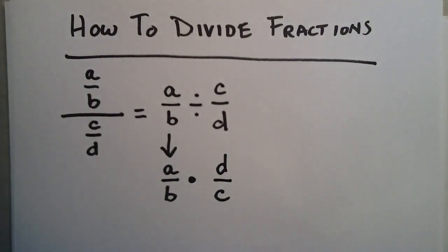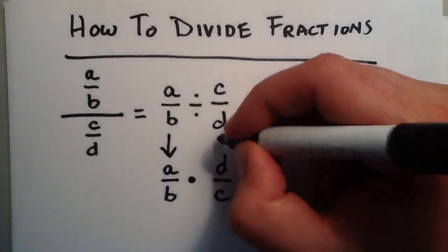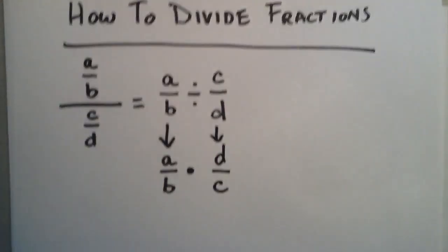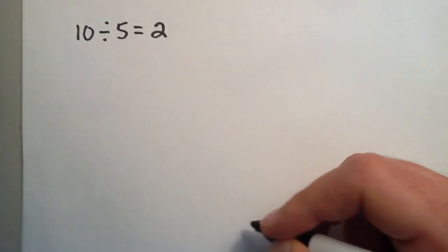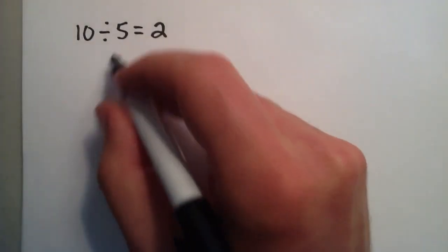So let's illustrate that this works with an elementary example. We all know from grade school that 10 divided by 5 equals 2.